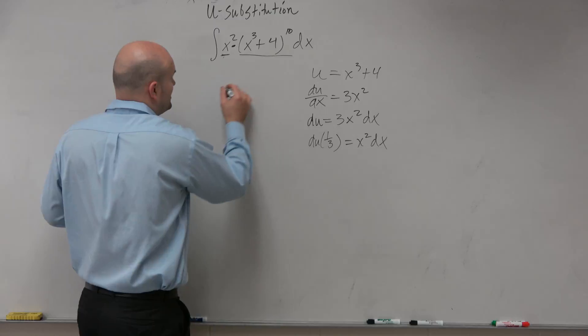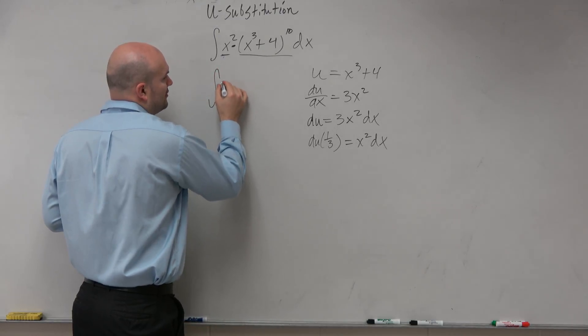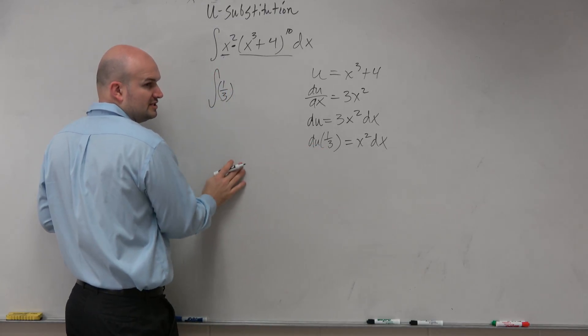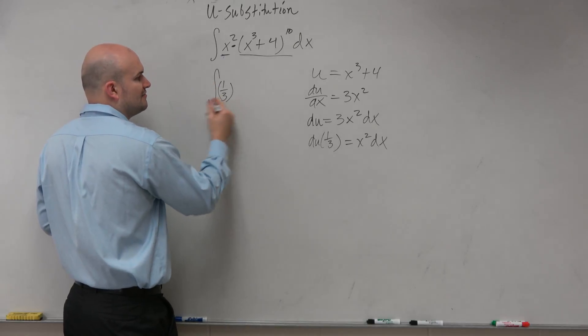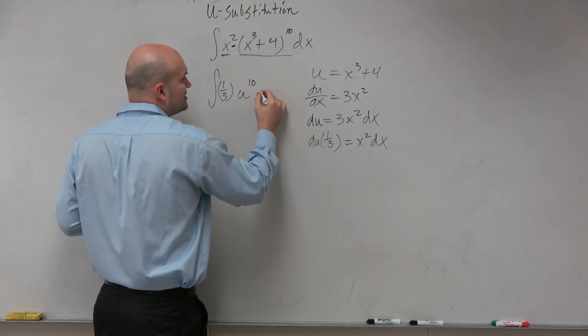So if I replace this as 1 third, now I'm not going to put the 1 third and the du next to each other because we like to have the constants in front, u to the 10th power, and then du.